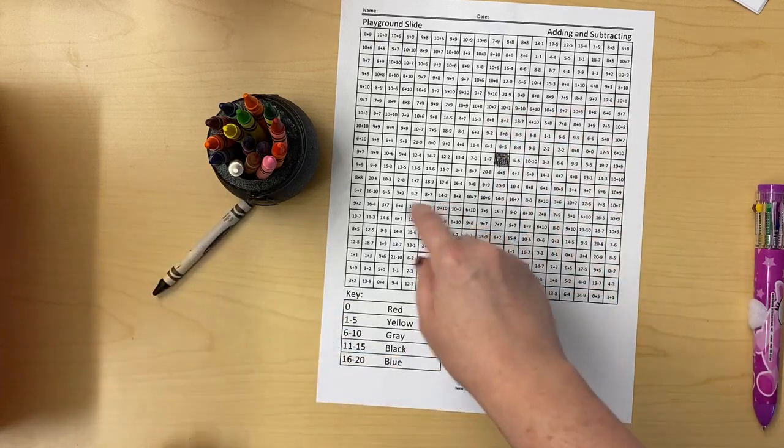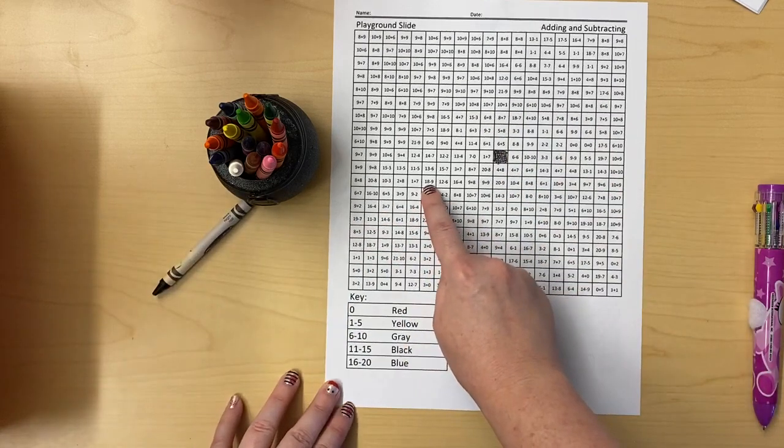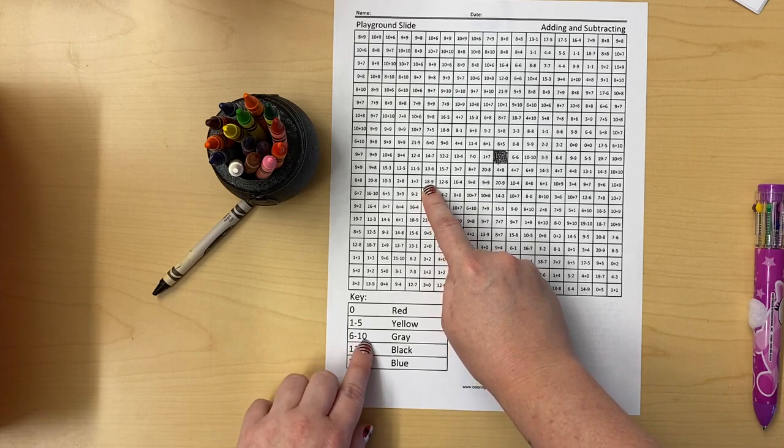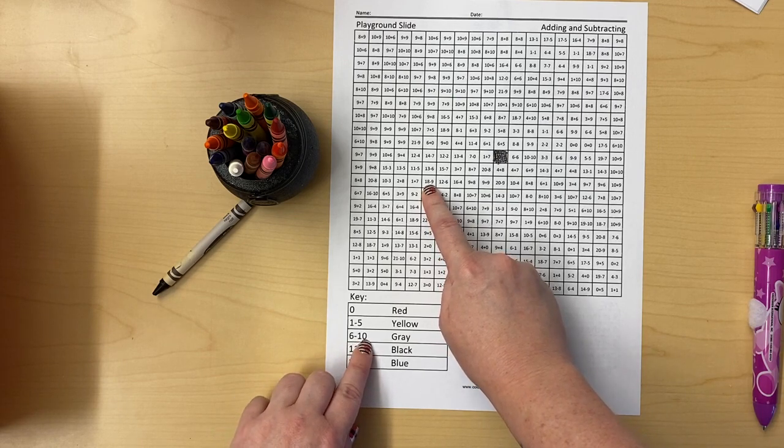Let's pick another one. How about 18 minus 9? 18 minus 9 is 9. That's between 6 and 10, so I'm gonna color that square gray.